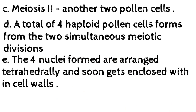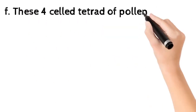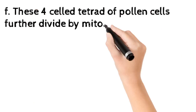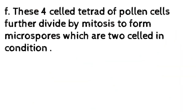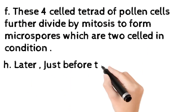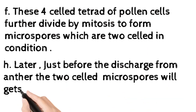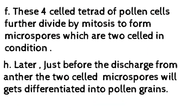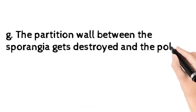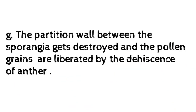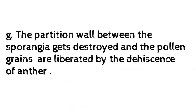These four-celled tetrads of pollen cells further divide by mitosis to form microspores, which are two-celled in condition. Later, just before discharge from the anther, the two-celled microspores get differentiated into pollen grains. The partition wall between the sporangia gets destroyed and the pollen grains are liberated by the dehiscence of the anther.